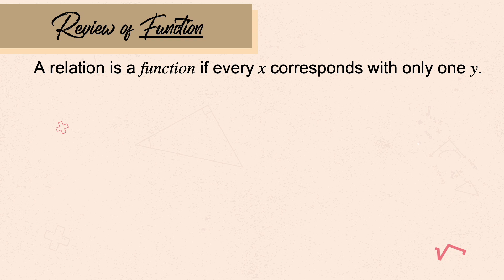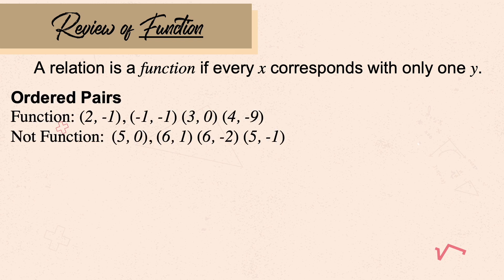There are three ways to identify if a given relation is a function or not. The first one is by identifying the domain and range using ordered pairs. Here are examples of ordered pairs for a function and not a function. In the first example we have: (2, -1), (-1, 3), (0, 4), (-9, ...). The rule is no repetition of domain.